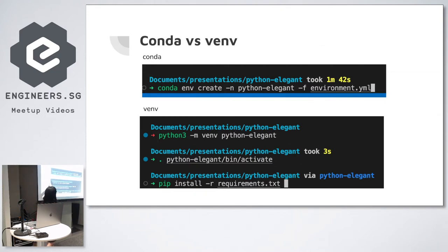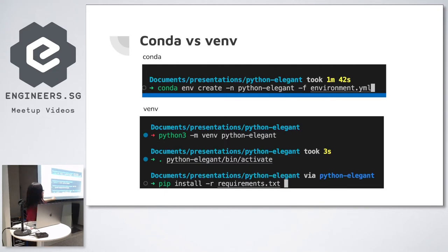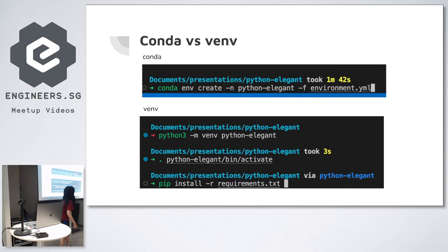You create and activate environments in different ways. This command line skin — I think it's called Starship — shows you the environment name, which is very important to know what environment is currently activated. It's not just for aesthetics; the most important thing is knowing what environment you're in at all times.